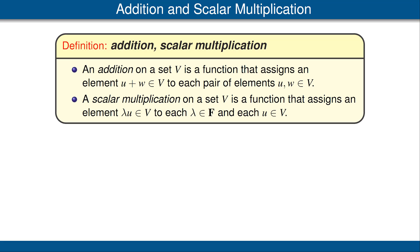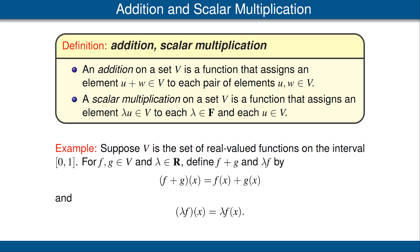Obviously, addition and scalar multiplication on F^n give an example. Let's look at another example. Suppose V is a set of real-valued functions on the closed interval [0,1]. For functions f and g in V and a real number λ, we define the addition f + g and the scalar multiple λf as you would expect. Namely, (f + g)(x) = f(x) + g(x), and (λf)(x) = λf(x). The key point here is that f + g and λf are both real-valued functions defined on the interval [0,1]. Thus, they are elements of V.